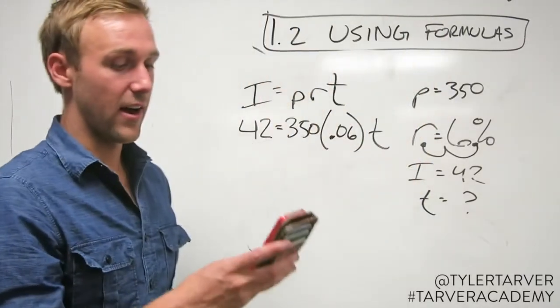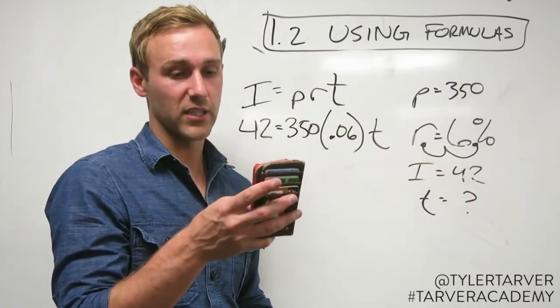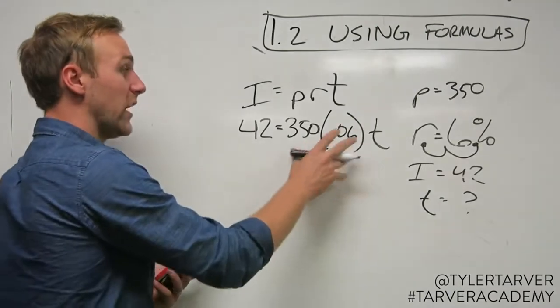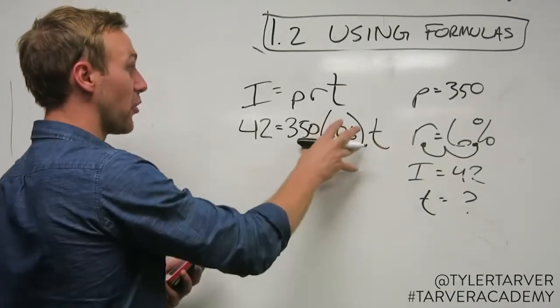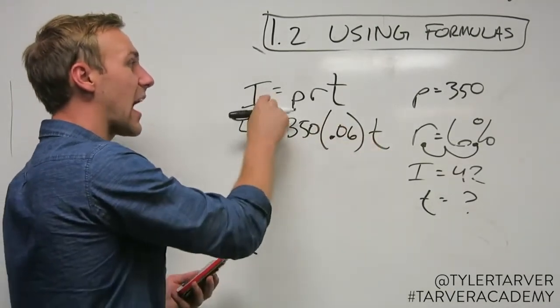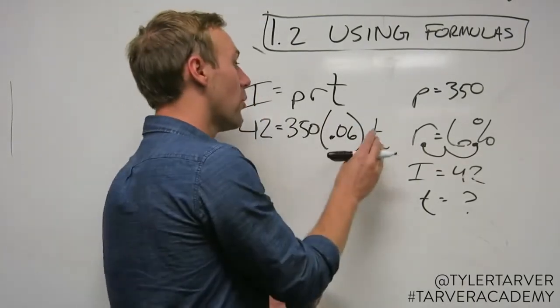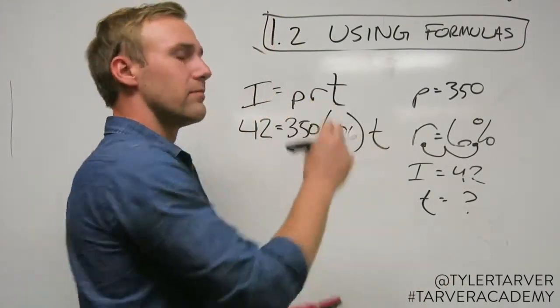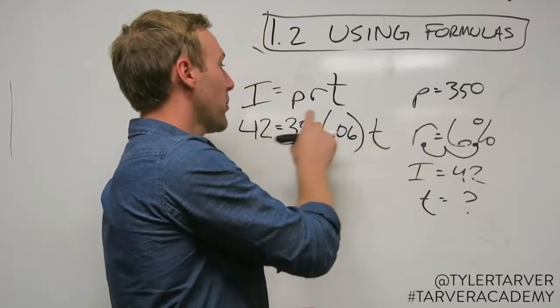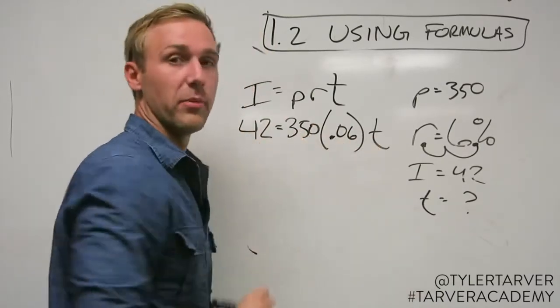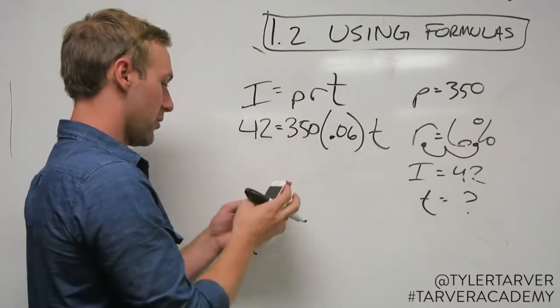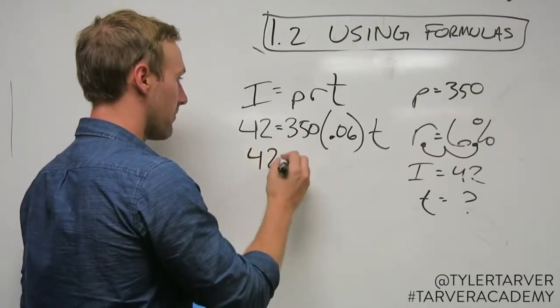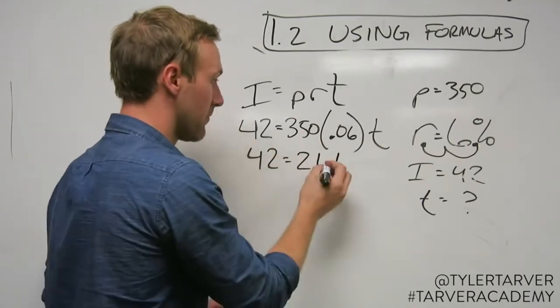Alright, so now we take out our calculators, which mine looks a lot like a cell phone because it is a cell phone. We need to simplify this and get T by itself. We've got to get this formula to where the T is by itself instead of the I being by itself, so we know how much time we have to put this in here.